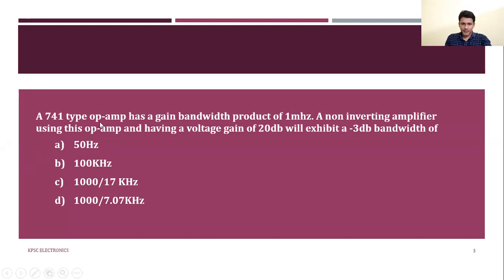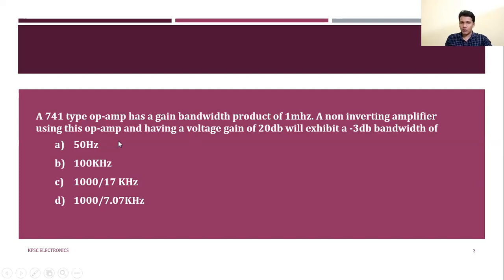option D 1000/7.07 kilohertz. For a 741 operational amplifier, the practical item only uses a 741 op-amp. In this case, the gain bandwidth product is 1 megahertz. We use the op-amp in a non-inverting amplifier configuration with a voltage gain of 20 dB.